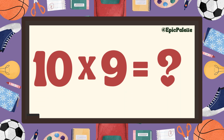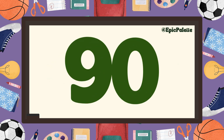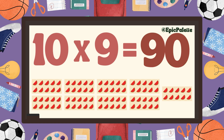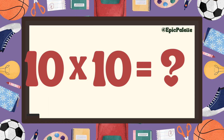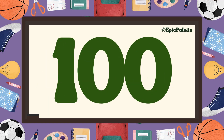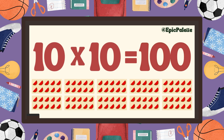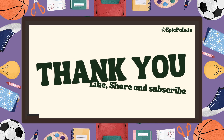Ten times nine equals... Ninety! That's right. Ten times nine equals ninety. Great job! Ten times ten equals... One hundred! That's right. Ten times ten equals one hundred. Wow!